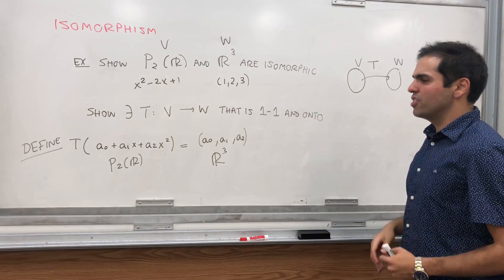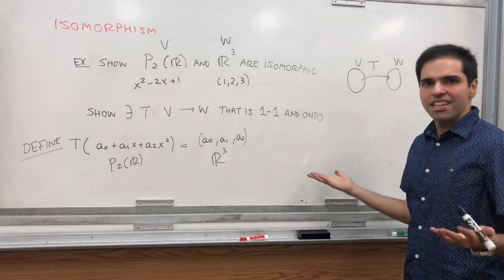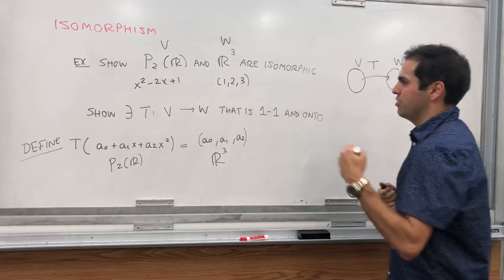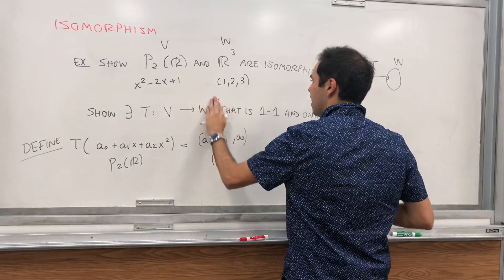And there are a couple of things we want to show. We want to show T is linear, we want to show it's one-to-one, and it's onto. I should have mentioned here, linear as well.